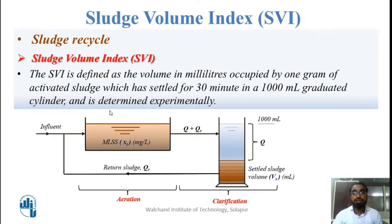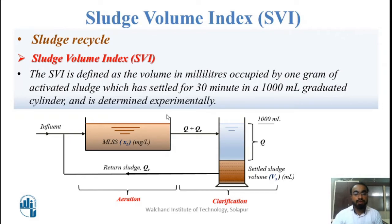So what is the definition of SVI? SVI is defined as the volume in milliliters occupied by 1 gram of activated sludge which has been settled for 30 minutes in a 1-liter graduated cylinder. It is determined experimentally. In the diagram, the secondary clarifier has been represented as a 1-liter graduated cylinder.